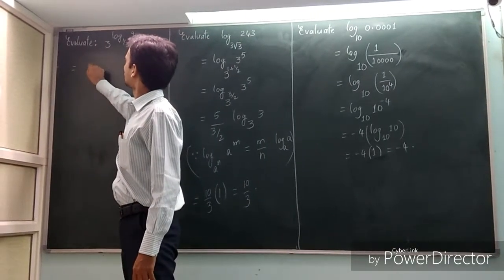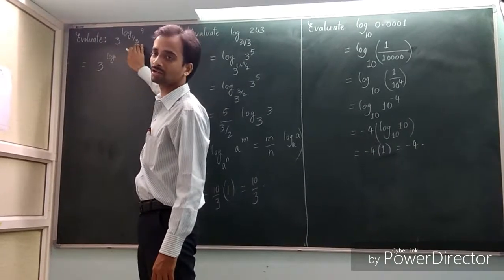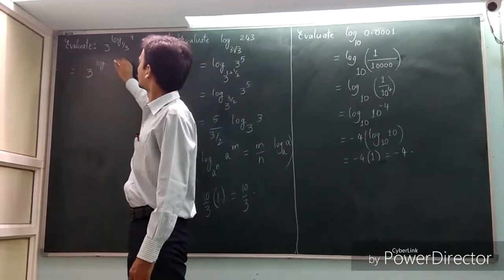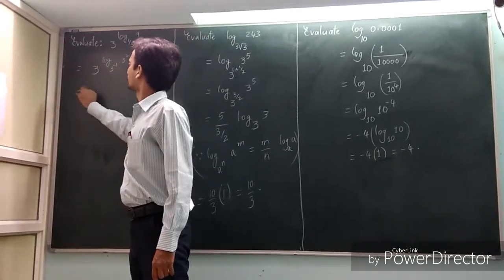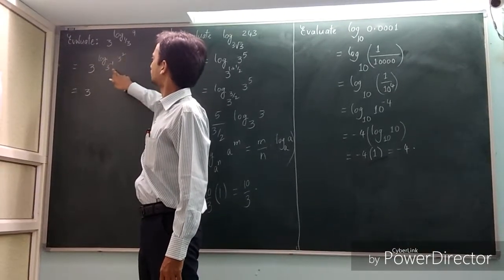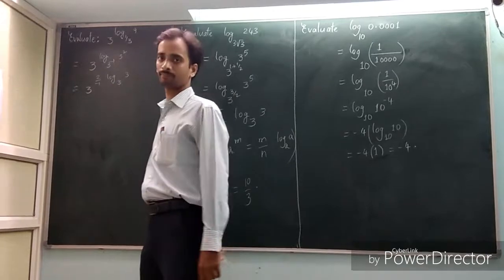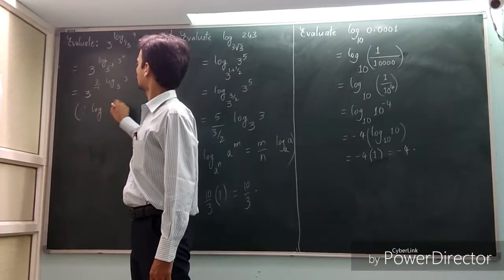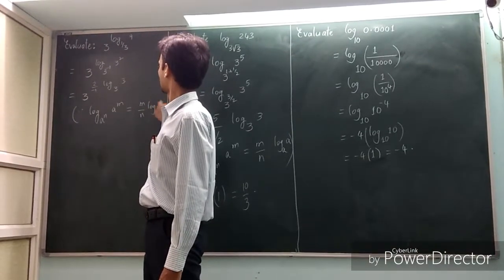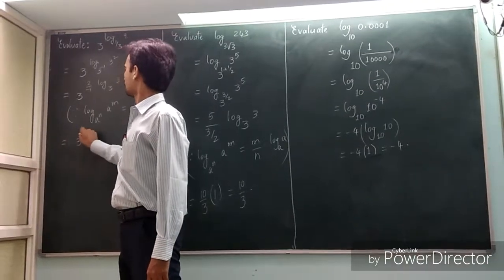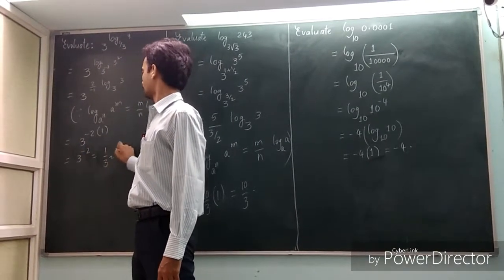This is equal to 3 power log 9 to the base 1 by 3. We can write 9 in terms of powers of 3: 9 equals 3 square, and 1 by 3 can be written as 3 power minus 1. Using the identity log a power m to the base a power n equals m by n times log a base a, this becomes 2 by minus 1 log 3 base 3. So this equals 3 power minus 2, and since log 3 base 3 is 1, we get 1 by 3 square, which is 1 by 9.